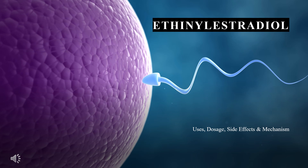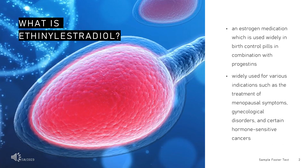Ethanolestradiol is an estradiol used as a contraceptive. Ethanolestradiol, also known as EE, is an estrogen medication which is used widely in birth control pills in combination with progestins. In the past, EE was widely used for various indications such as the treatment of menopausal symptoms, gynecological disorders, and certain hormone disorders. It is usually taken by mouth but is also used as a patch and vaginal ring. EE was developed in the 1930s and was introduced for medical use in 1943.